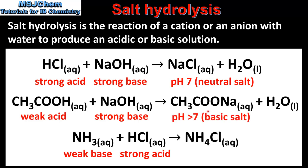In our second reaction, which involves the reaction of a weak acid and a strong base, the solution formed has a pH greater than 7. And in the last reaction, which involves a weak base and a strong acid, the solution formed has a pH less than 7. So these two reactions involve salt hydrolysis, where a cation or an anion from the salt reacts with water to produce an acidic or basic solution.